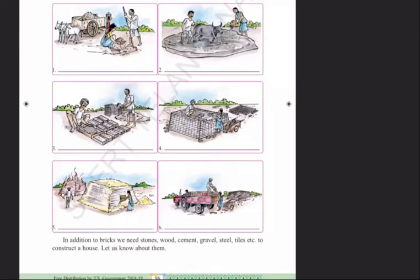Hello children, in EVS we are reading Lesson 8: House Construction and Sanitation. On page 96, we see pictures of how to construct a house and what materials are used. Materials include cement, bricks, sand, wood, plywood, steel rods, marble slabs, tiles, etc. Tools required include hand drill, screwdriver, cutting tools, hammer, plumb line, etc.